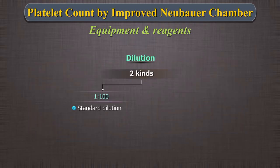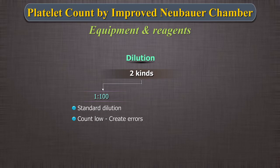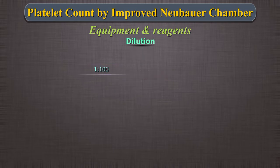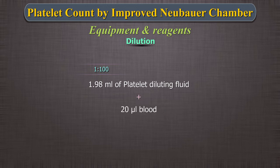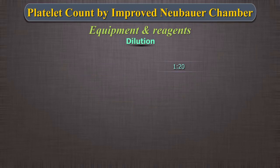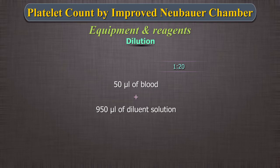Dilution: The standard dilution for platelet counts is 1:100. However, if the count is low, the 1:100 dilution can be difficult and can create errors. Therefore, if warranted, a 1:20 dilution can be employed. For 1:100 dilution: take 1.98 ml of platelet diluting fluid in a tube, then aspirate 20 microliters of blood in a pipette and mix it with the diluent — this results in a 1:100 dilution. For 1:20 dilution: take 50 microliters of blood and mix with 950 microliters of diluent solution. Wait for 10 to 20 minutes before charging the hemocytometer.